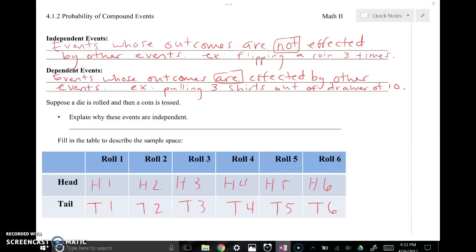Okay, independent events are not affected by other events. So what we're talking about is the probability of something happening does not then be affected by some other circumstances. So the example that I gave was flipping a coin three times.